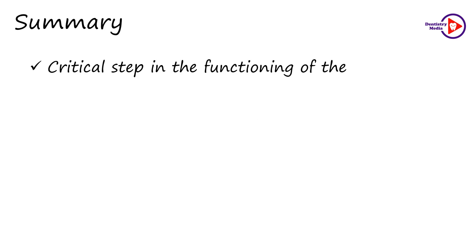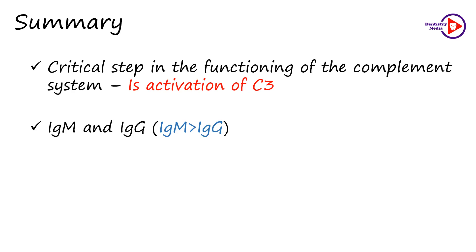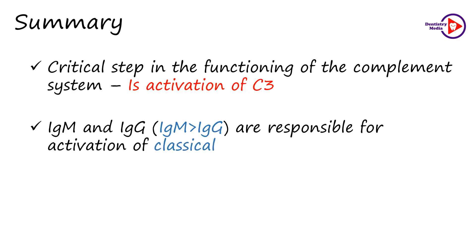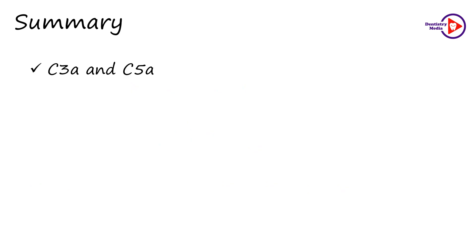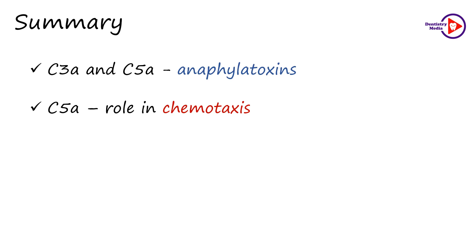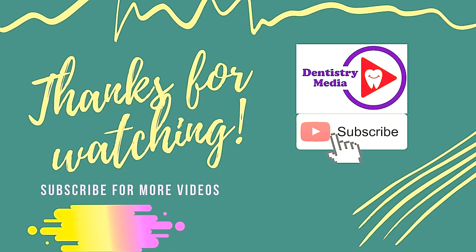To summarize: the critical step in the functioning of the complement system is the activation of C3. IgM and IgG, with IgM more so than IgG, are responsible for the activation of the classical pathway, and IgA is required for the activation of the alternative pathway. C3A and C5A act as anaphylatoxins, and C5A also has an important role in chemotaxis. C3B acts as an opsonin, and the deficiency of the C1 inhibitor leads to hereditary angioneurotic edema. Thank you for watching and do subscribe for more videos related to dentistry.